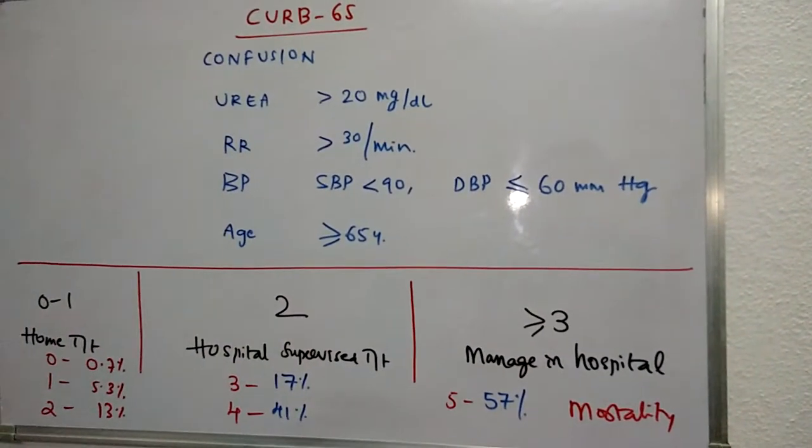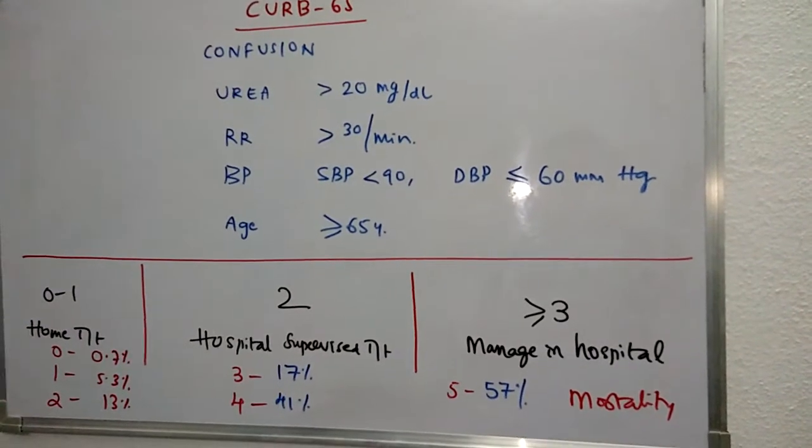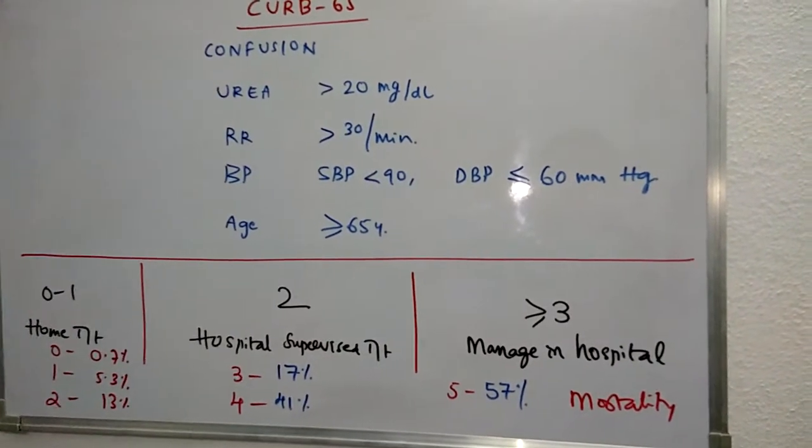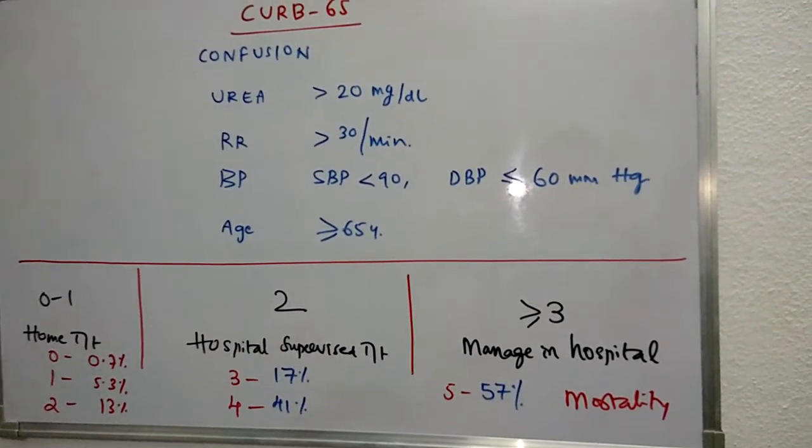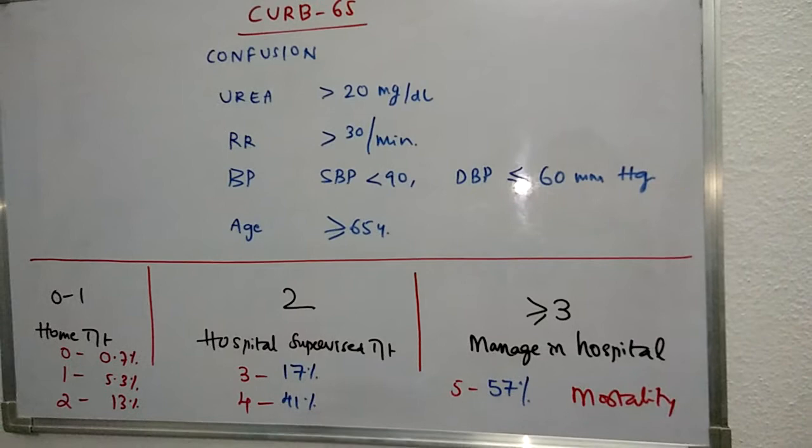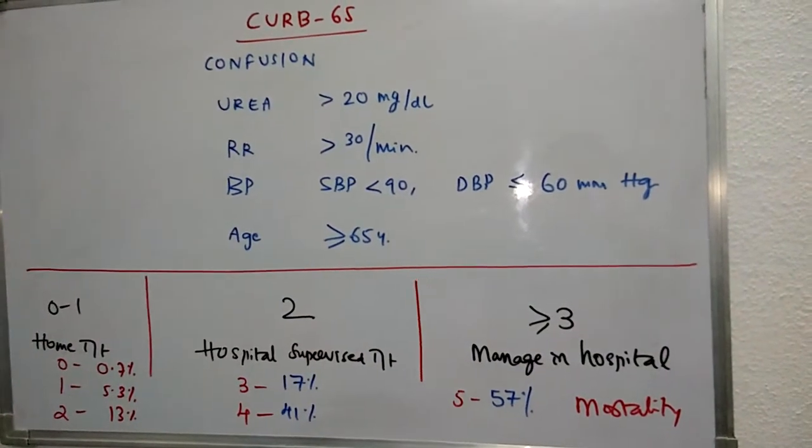Other criteria include blood urea more than 20 mg per deciliter, respiratory rate more than 30 per minute, systolic BP less than 90 mm Hg and diastolic BP less than or equal to 60 mm Hg, and age more than or equal to 65 years.